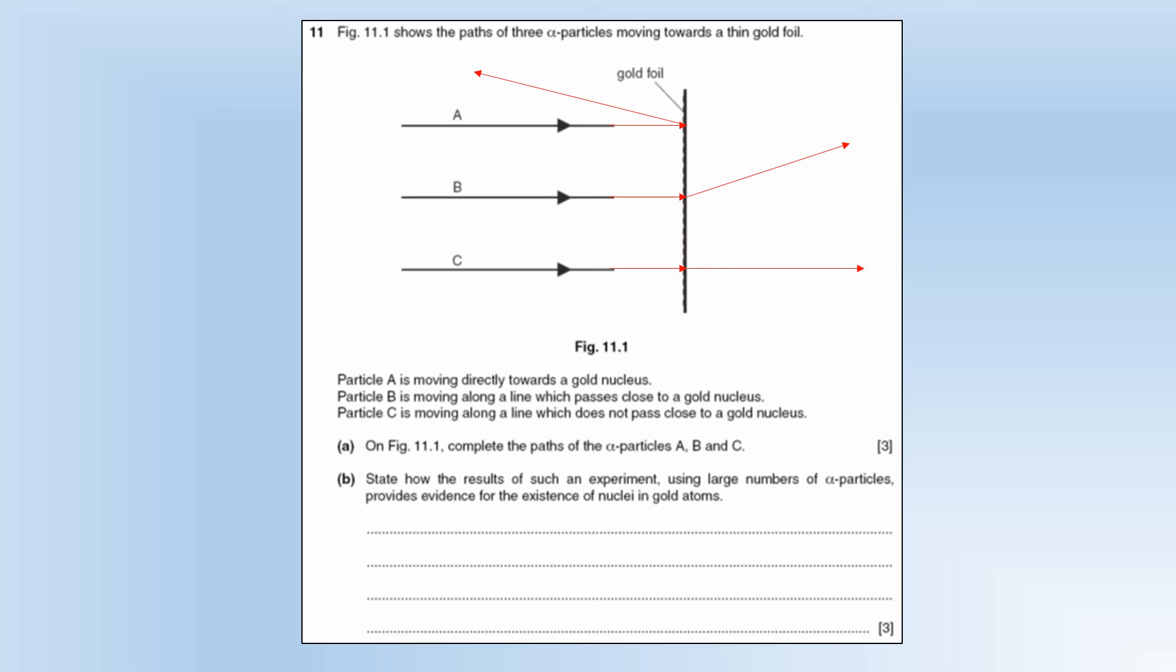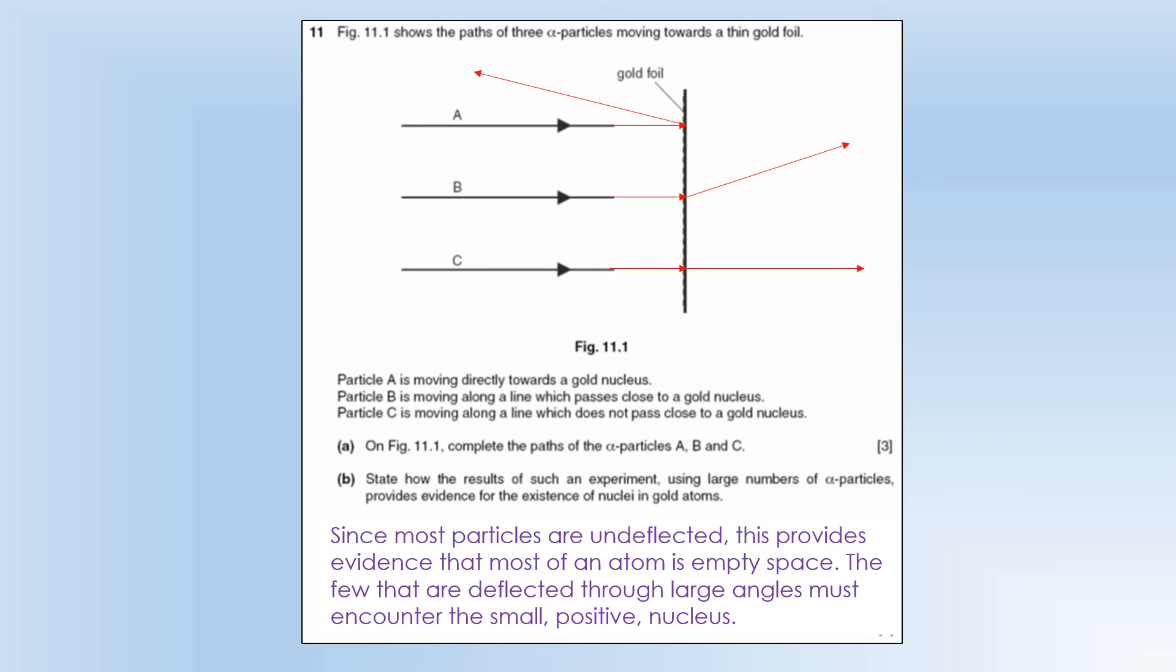State how the results using a large number of alpha particles provide evidence for the existence of nuclei. So the key is that most particles are undeflected. That shows that most of the atom is empty space. Only a couple are deflected through large angles, which must mean that they encountered the small positive nucleus. So it shows it's not completely empty space, that there is something in there that can affect things.